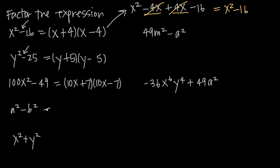We can also do this when both of our squares are just variables and there are no constants involved at all. The square root of a squared is a, and the square root of b squared is b. We add one and subtract the other.